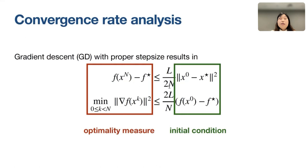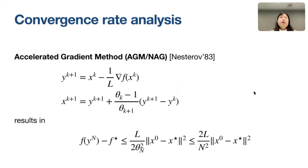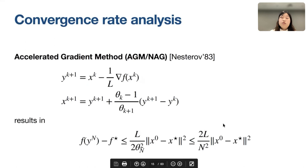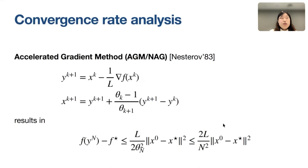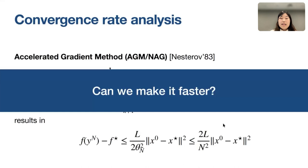Many people wondered whether this convergence rate could be faster. This was made possible in the seminal work of Nesterov in 1983. His accelerated gradient method (AGM, also called NAG) takes a gradient descent step and adds a momentum term, resulting in a convergence rate of 1/N². This was a huge improvement over the 1/N rate.